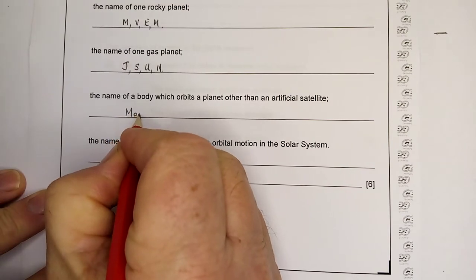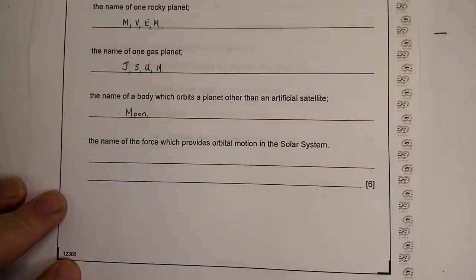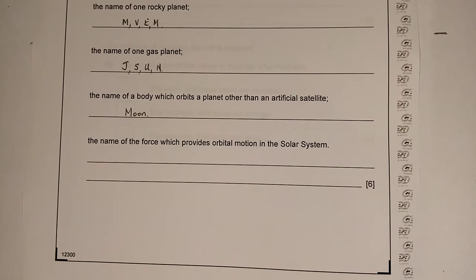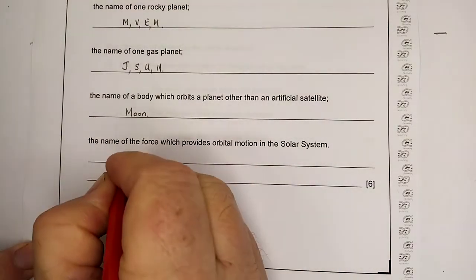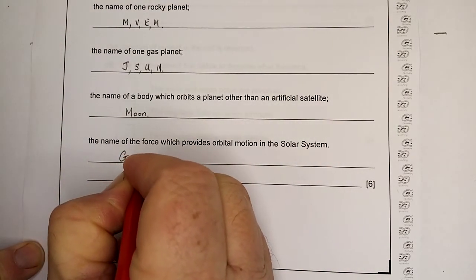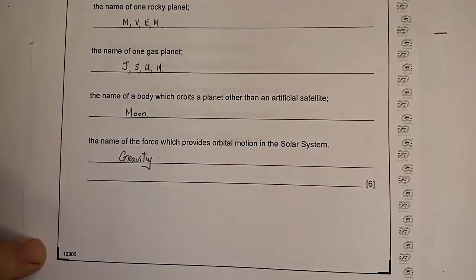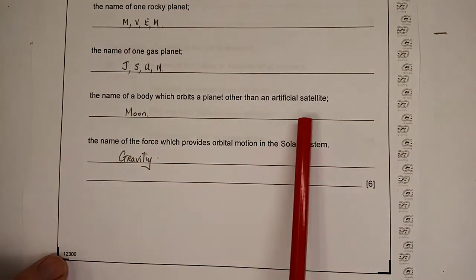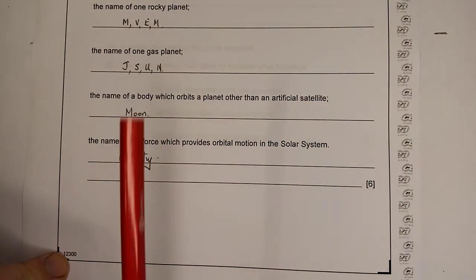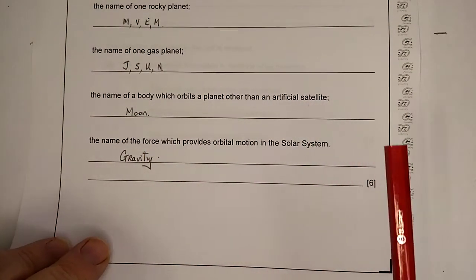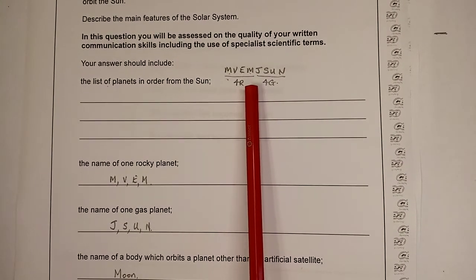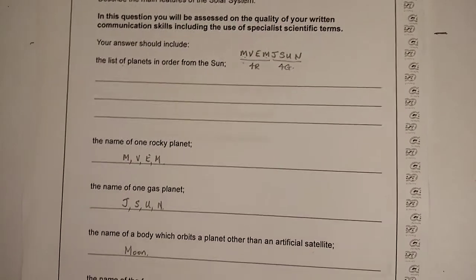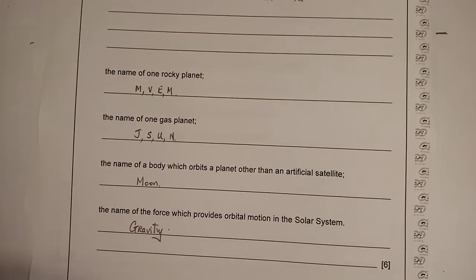Name a body which orbits a planet other than an artificial satellite. Go for a moon. We have one moon, but there are some other planets that have many moons. The name of the force which provides the orbital motion in the solar system is gravity. Gravity makes all other planets orbit around the sun and all satellites orbit around the planet. So we made it on this question a bit quick. The mnemonic is the key and the spelling is the rest. That's question number three done.